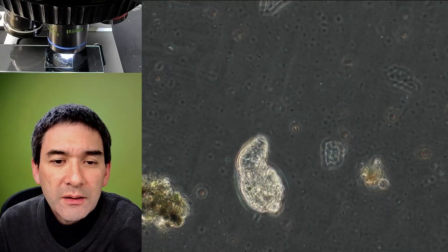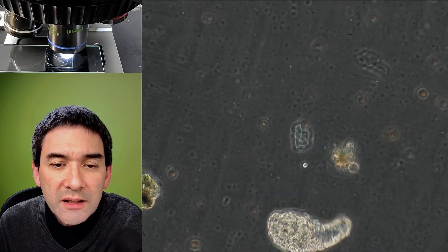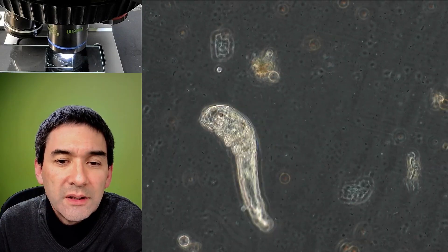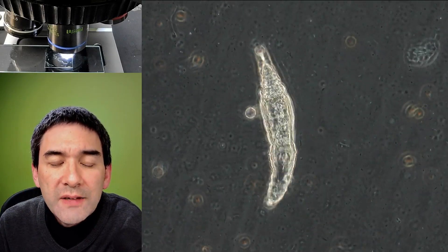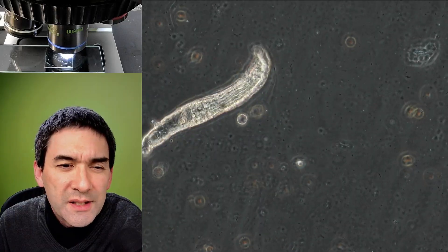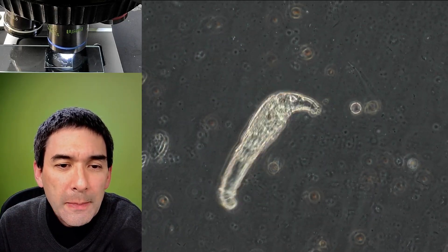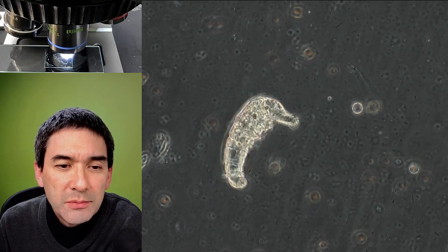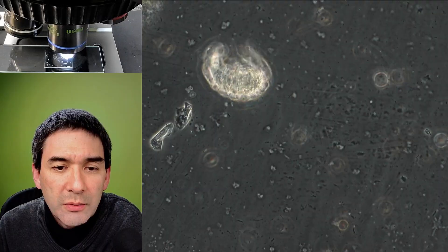Phase contrast allows you to see cells that are very transparent. And the technique converts differences in refractive index into brightness differences. I think I'm not going to talk too much about the optical theory here. But in any case, I think it's quite clear that you're able to see in the background.